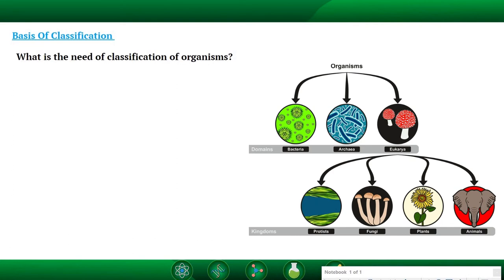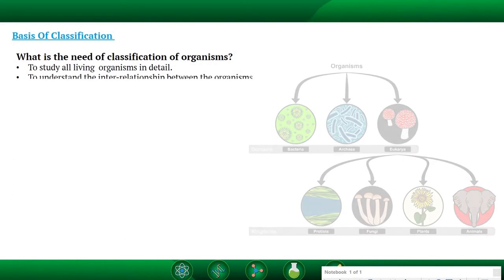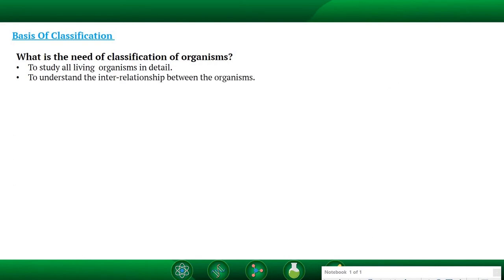As you all know, there are different types of living organisms present in nature. For the study of different living organisms and animals, we need to do classification. Due to classification, we can study different types of organisms only by observing and classifying them into different groups. The next point is to understand the interrelationship between organisms, we need to do classification.